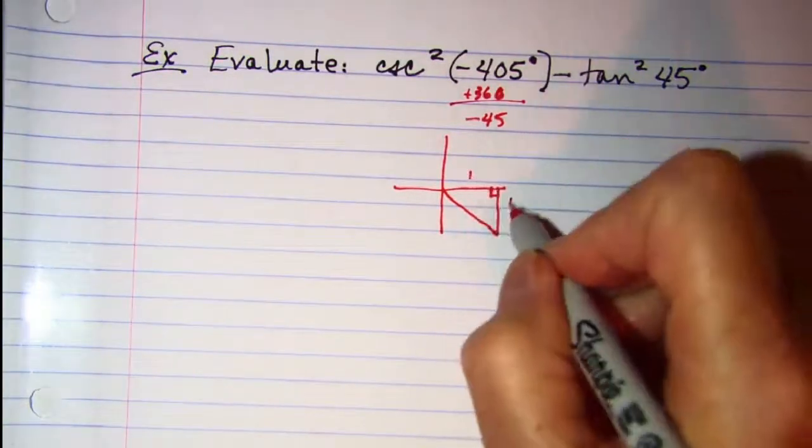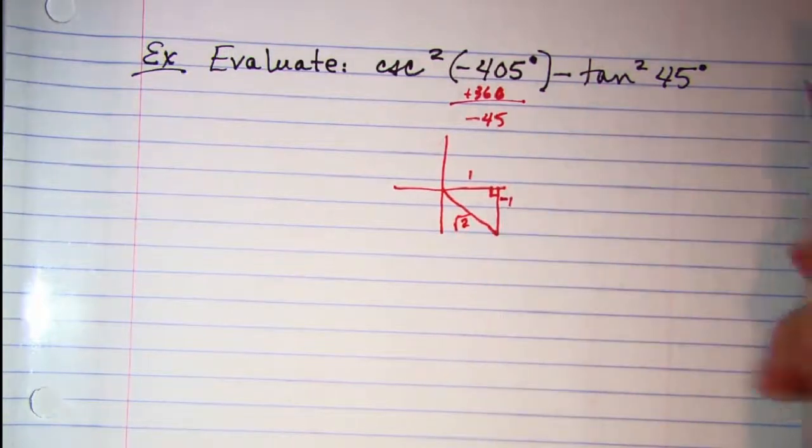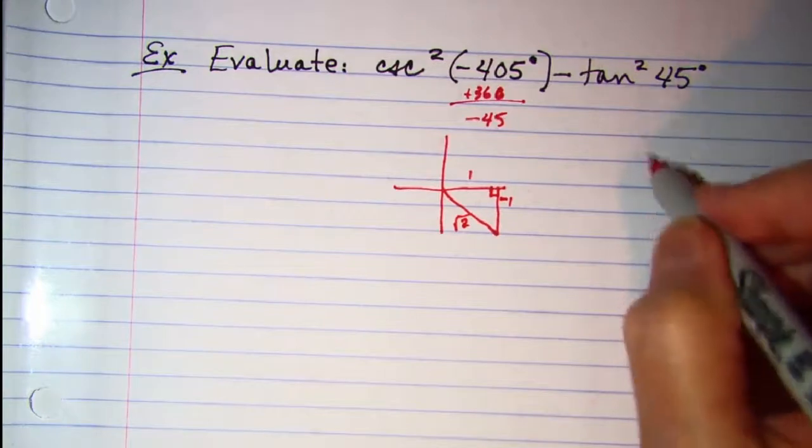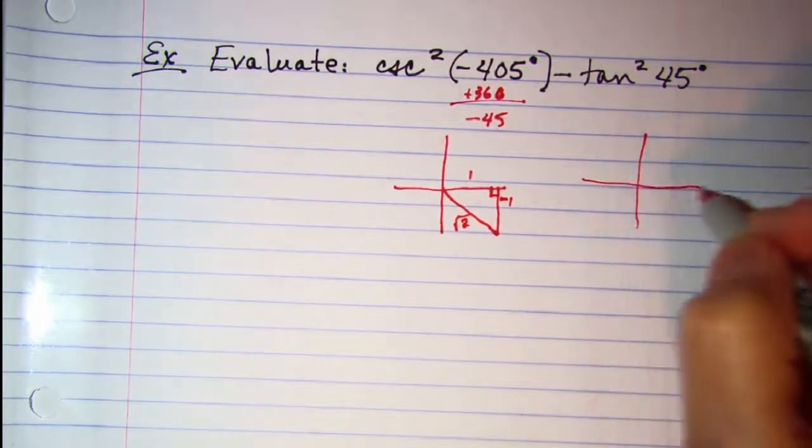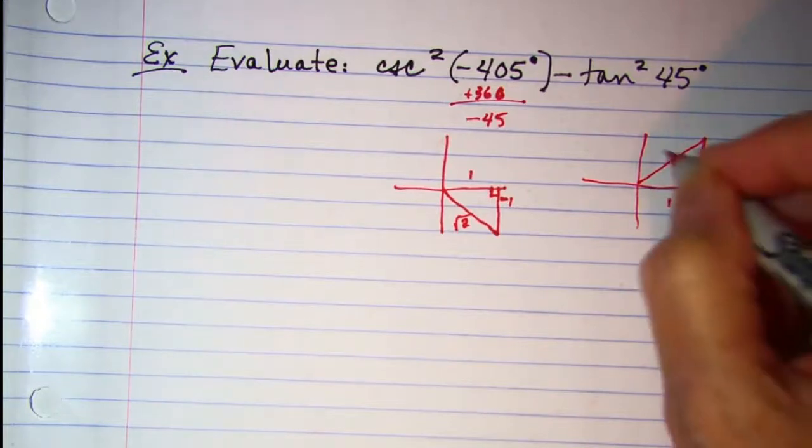45 degrees, 1, 1, √2. This one is negative. And then for this one, let's go ahead and draw the reference triangle for that. Positive 45, so we have 1, 1, √2.